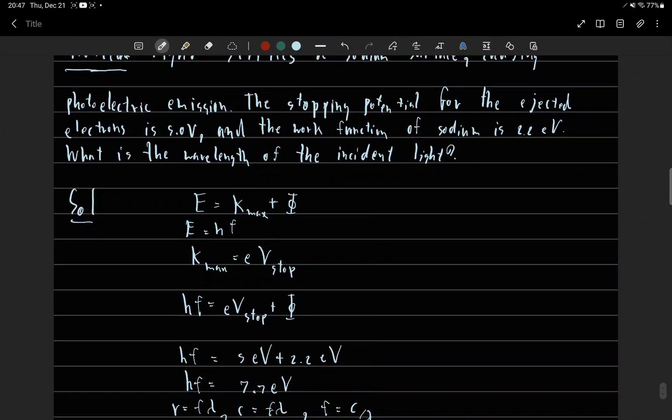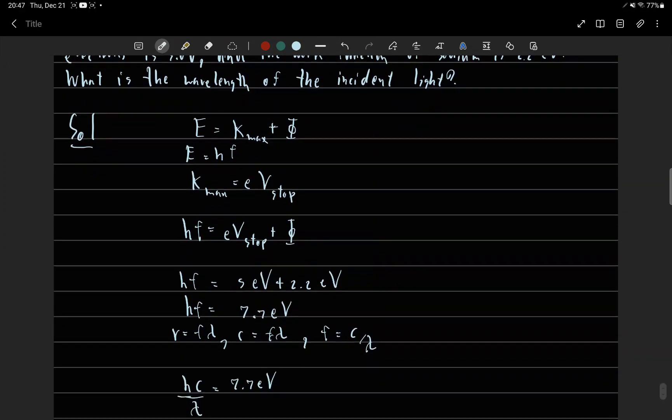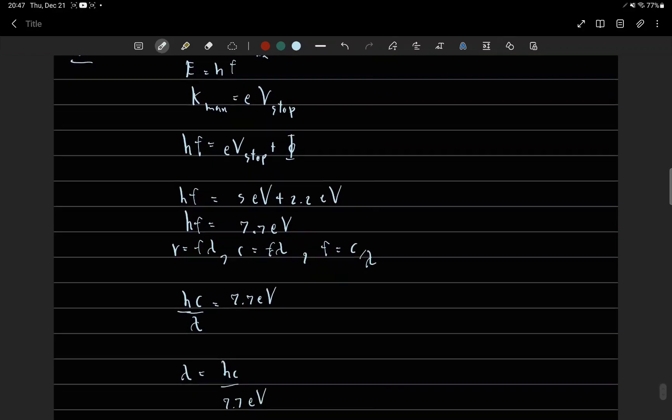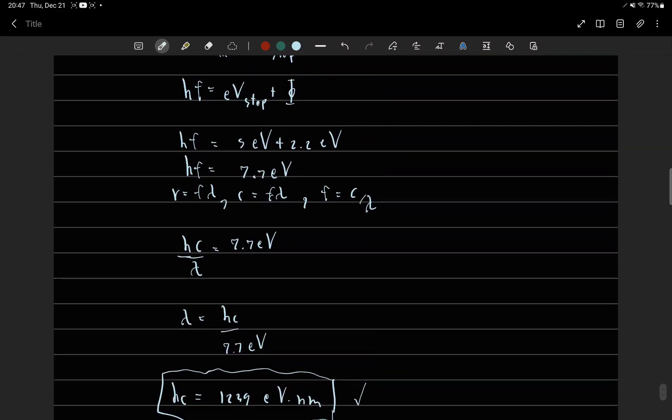HF equals 7.7 electron volts. And HF can be written as HC over lambda.